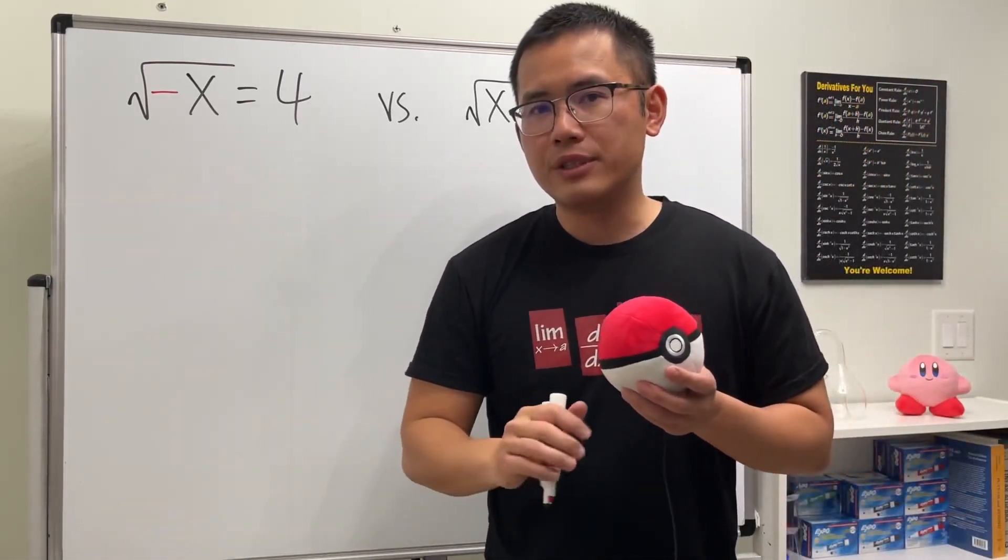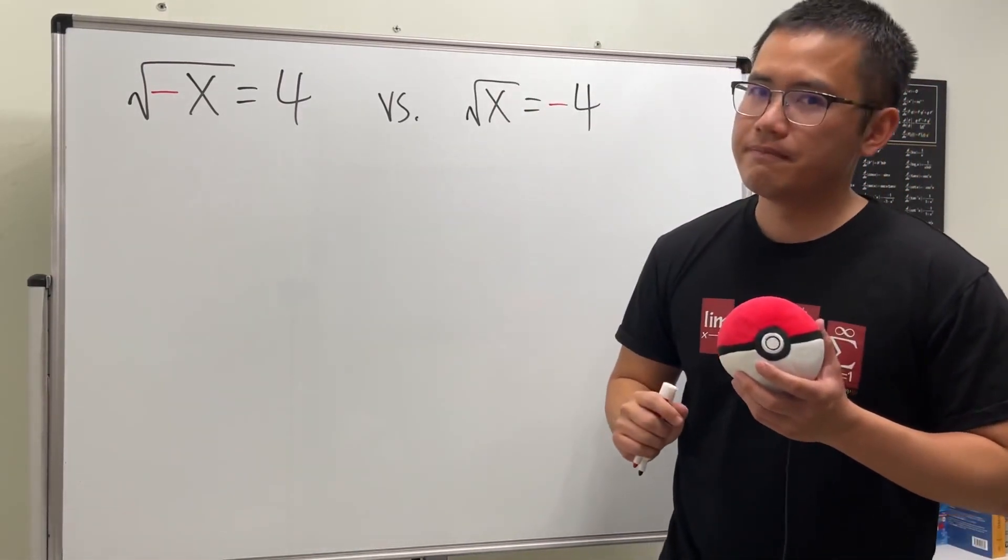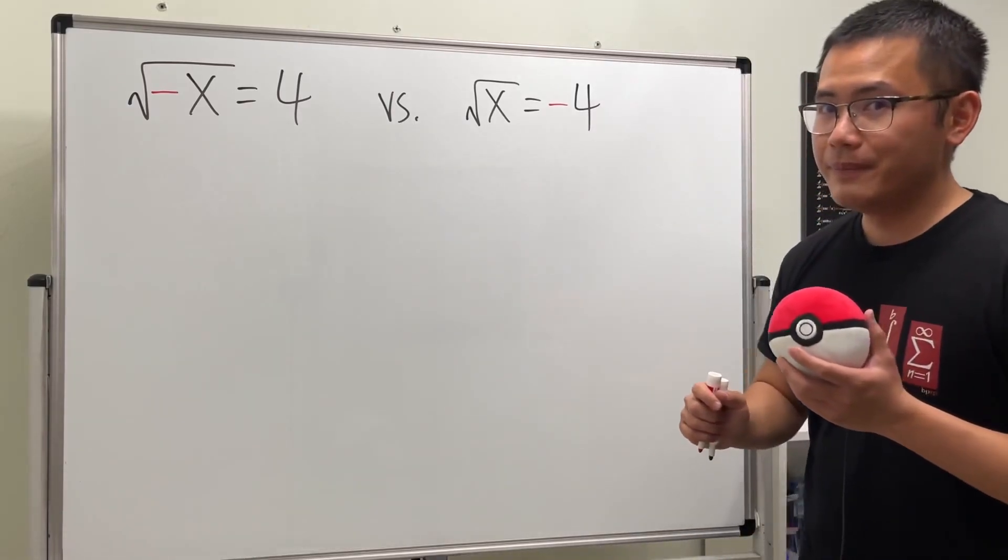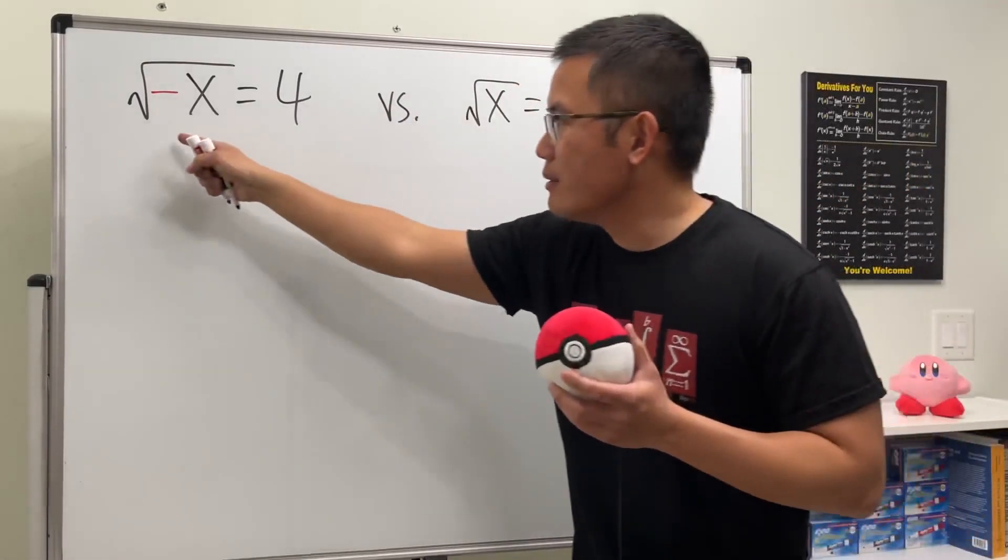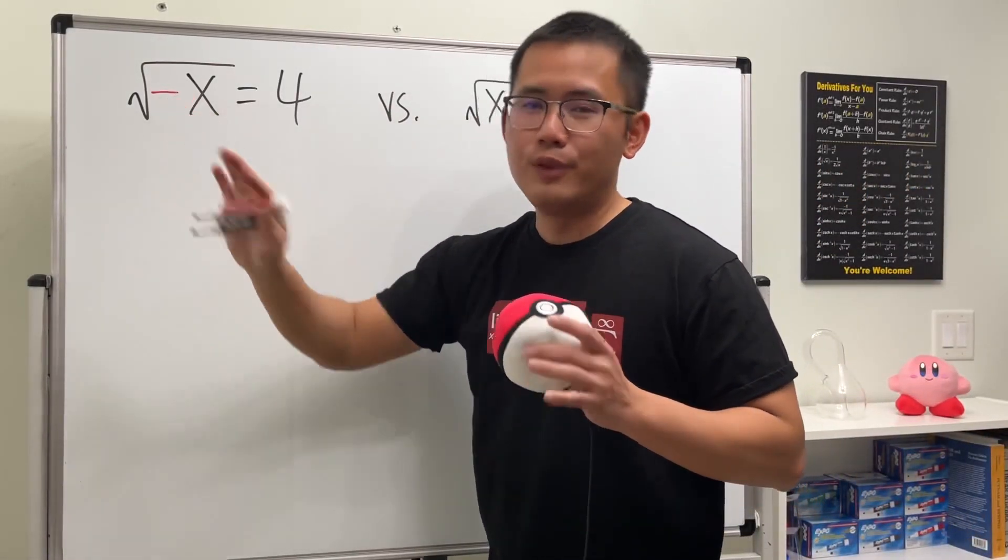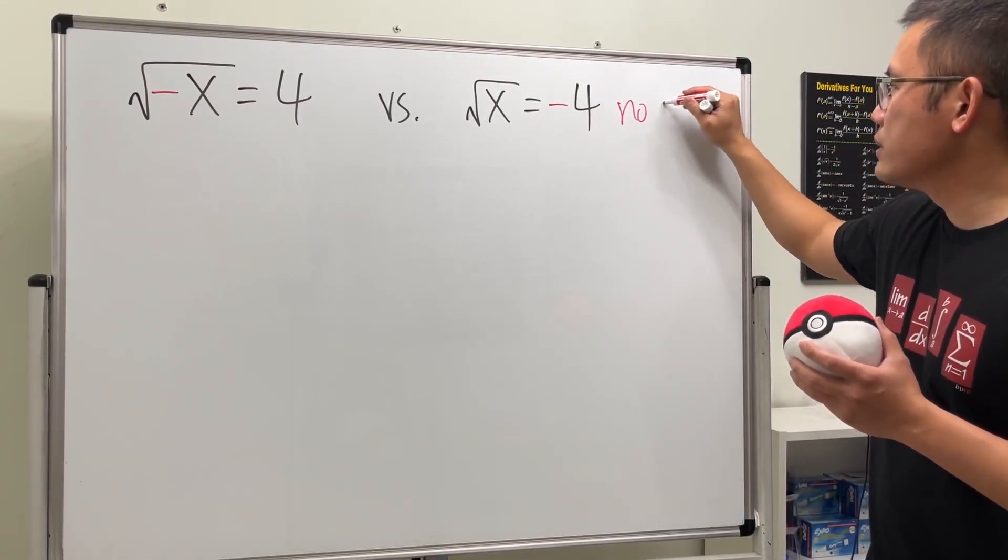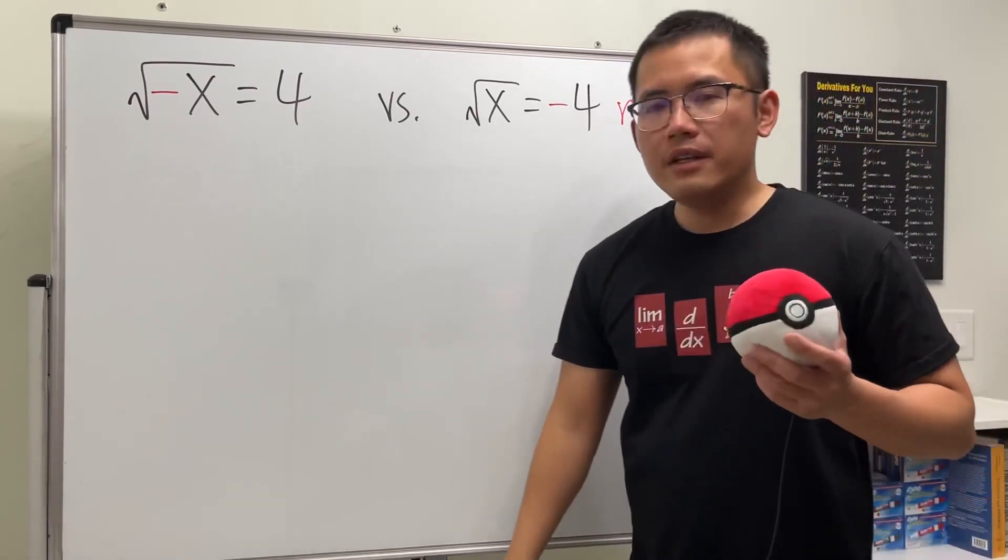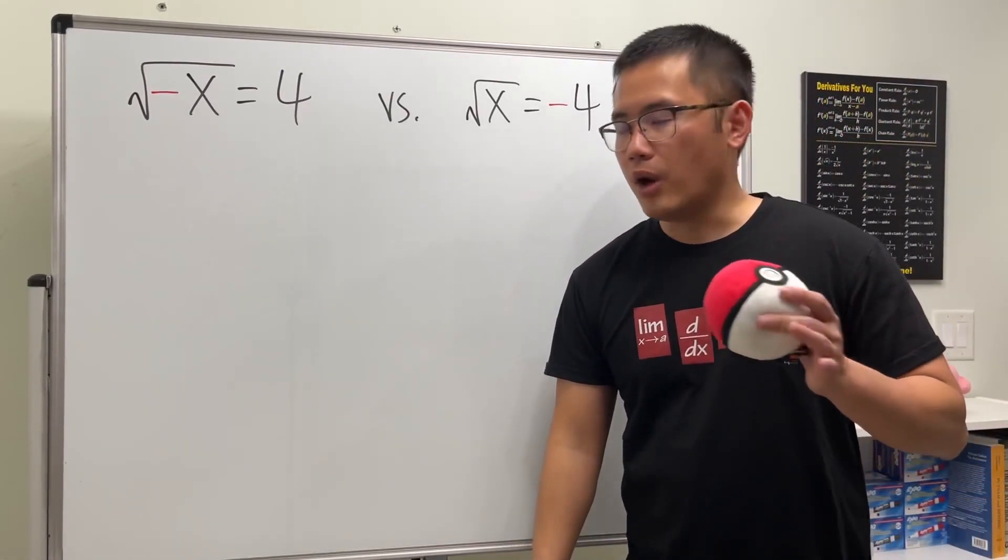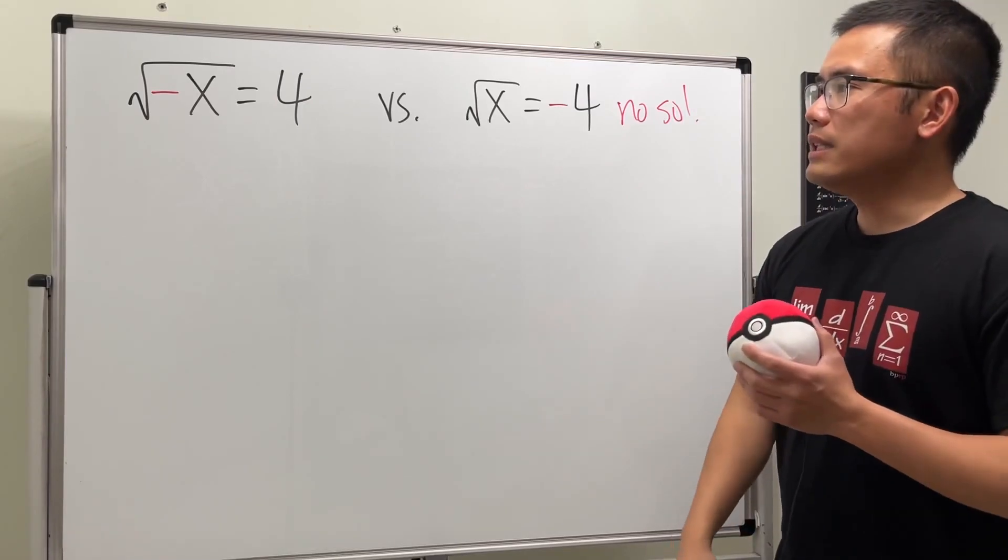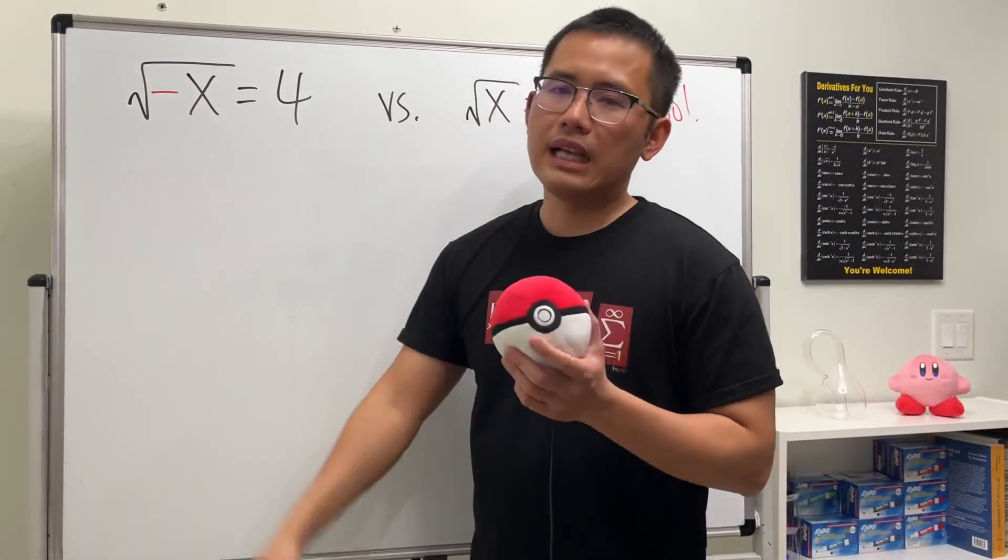I will tell you one of them actually does not have any answers. Which one? The answer is this right, because we cannot have negative inside. No, just kidding. This right here actually has no solutions, not even in the complex number world, no solution at all.